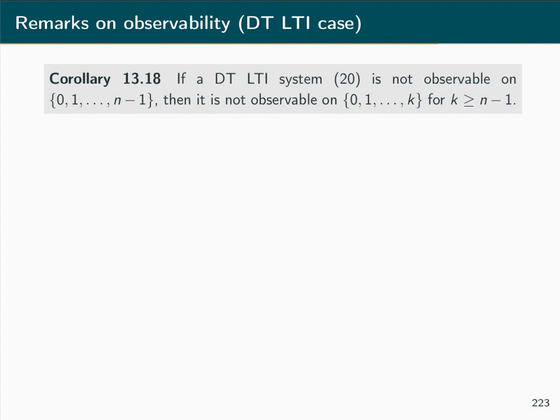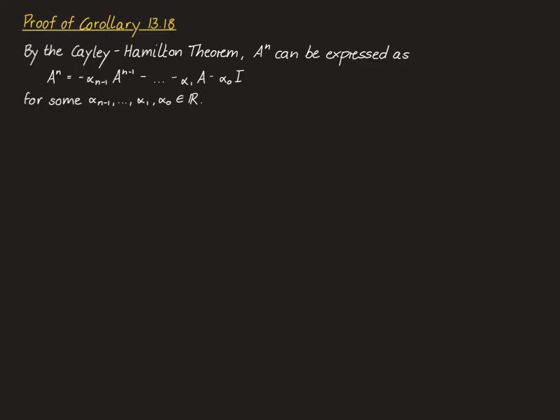Corollary 13.18 states that if a discrete time linear time invariant system is not observable on the interval from 0 to n-1, then it will not be observable on any longer time interval. This is the observability analogue of the controllability result that a system not controllable on [0, n] will not be controllable on any longer interval. At the core of the proof is again the Cayley-Hamilton theorem.